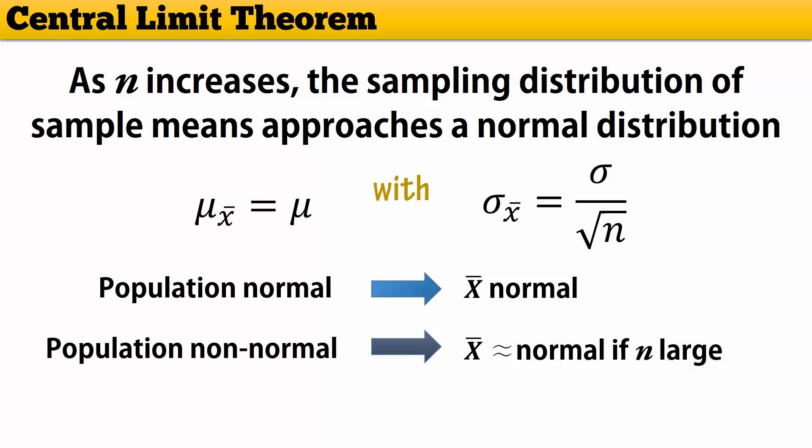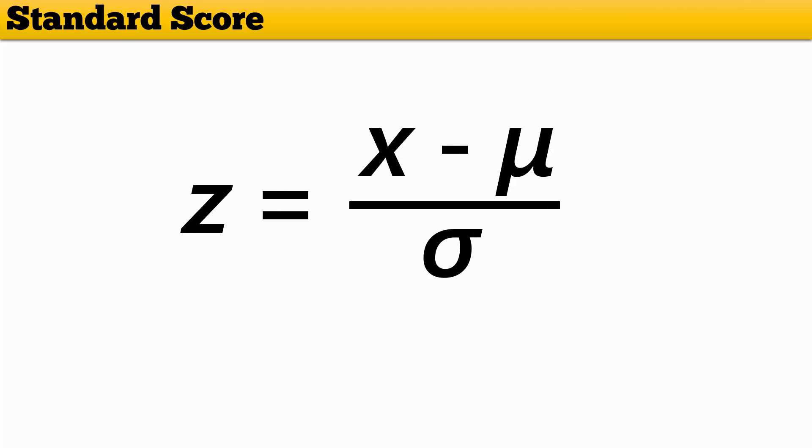And by large, we often say when n is at least 30. Now, recall that an individual score x in a normal population is standardized using x minus mu over sigma. To standardize the mean of a sample of size n, we replace x by x bar and change the standard deviation to the standard error of the mean.